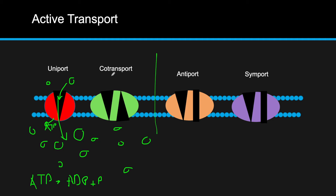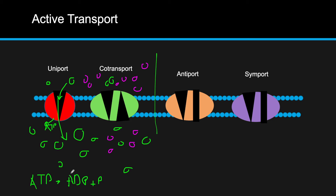In co-transport, two different molecules are involved. Say you have green molecules at a very low concentration inside and high outside, and also pink molecules at very low concentration inside and high outside. The membrane protein utilizes ATP to move both against their concentration gradients — the green molecules come in and the purple molecules go out — so ATP is moving them both against their concentration gradients.